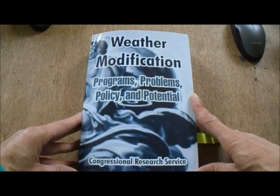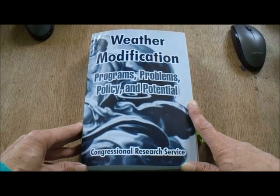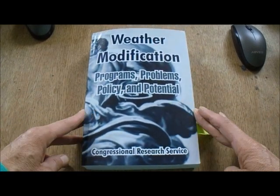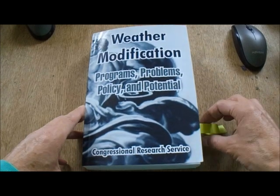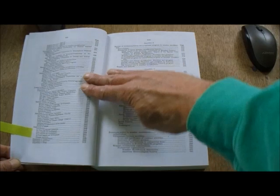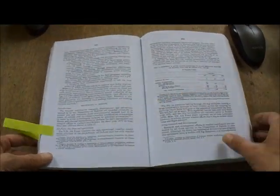Hi there, welcome along to another video. We're going to go back to the book Weather Modification, Programmes, Problems, Policy and Potential from the Congressional Research Service in the late 1970s. So we're going to go to chapter 5, page 302, and go straight in with the Department of Defence.